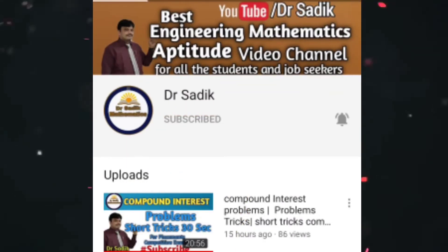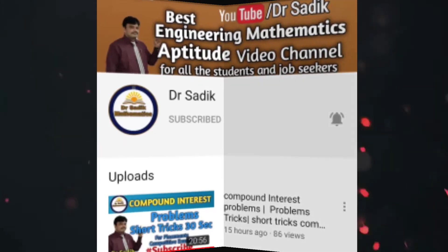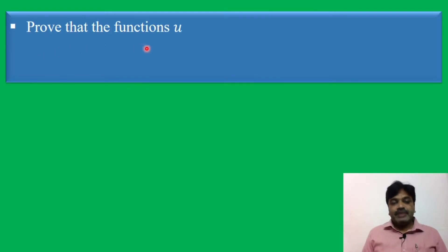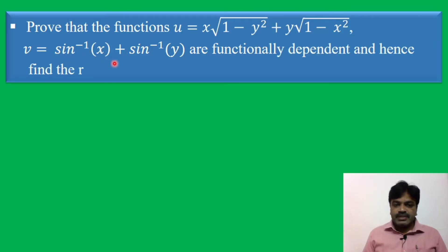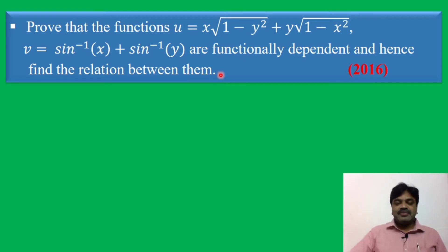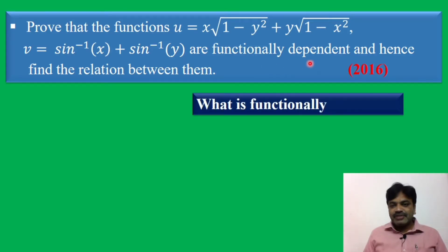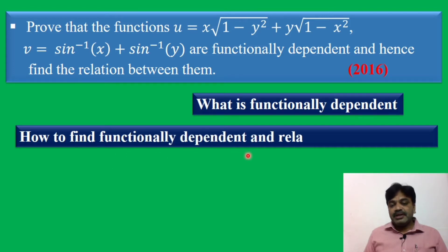Subscribe to Dr. Sadiq Mathematics channel for getting more online videos. Prove that the functions u equals x times square root of 1 minus y squared plus y times square root of 1 minus x squared, and v equals sin inverse x plus sin inverse y, are functionally dependent, and hence find the relation between them. What is functional dependence and how do we find it?